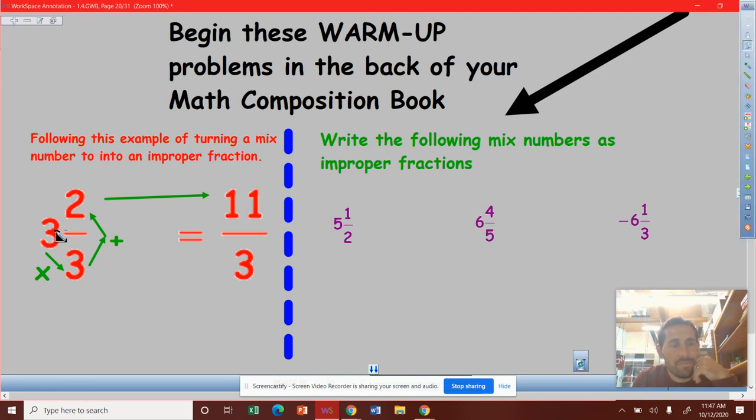Here it says 3 and 2 thirds can be rewritten as 11 over 3. You do 3 times 3 is 9, then plus 2. 9 plus 2 is 11. So we just put the 11 and then we take that denominator 3 and bring it over.